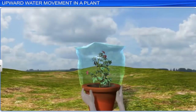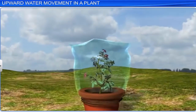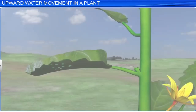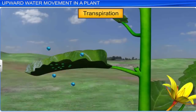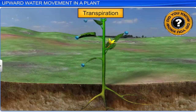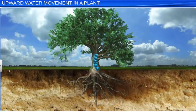Transpiration can be witnessed by enclosing a healthy plant inside a polythene bag. You will notice that droplets of water have formed inside the bag. These water droplets are caused by the loss of water from leaf stomata by transpiration. The water loss due to transpiration pulls the water upwards in a plant stem. Did you know that the transpirational pull generated by this process of transpiration is strong enough to cause water to move upwards even in tall trees, by as much as 15 meters per hour?